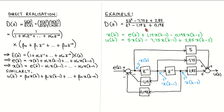From our controller transfer function, we can write down the two controller equations for the direct realization. We can see that the equation coefficients are the same as for the difference equation, but in this case we only have to store the two previous values of the intermediate signal x, instead of storing both previous controller input values and previous controller output values as in the difference equation case. We can visualize the controller calculations with a block diagram drawn from the two controller equations, with the intermediate signal x shown in blue.